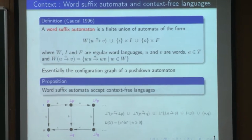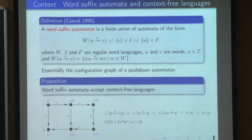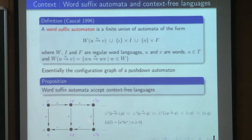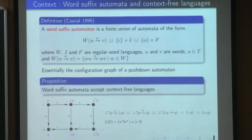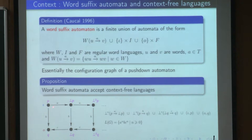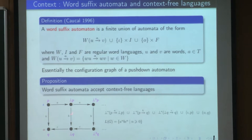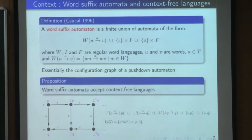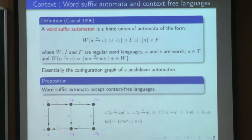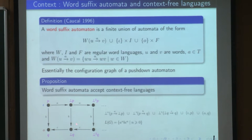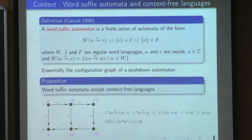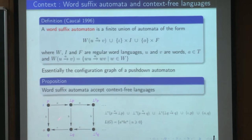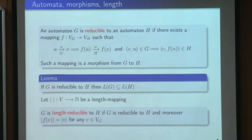Here is an example. For the vertices, we have the letters P, Q, and bottom. To make an edge labeled by A, you just push the letter bottom. For an edge labeled by B, you switch the state P to the state Q. The language accepted by this word suffix automaton is the language A^n B^n C^n.